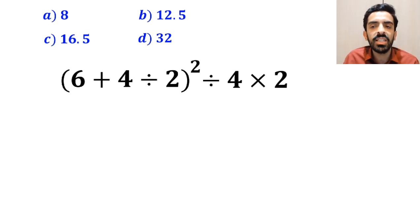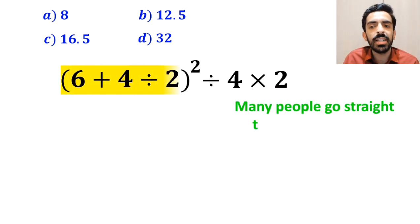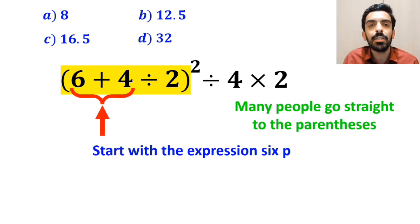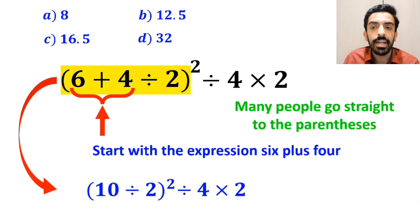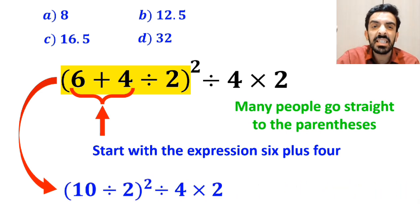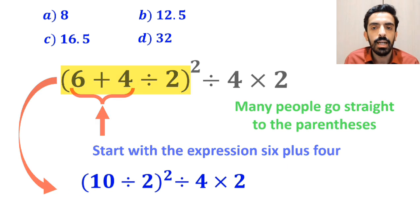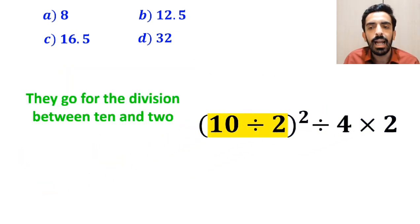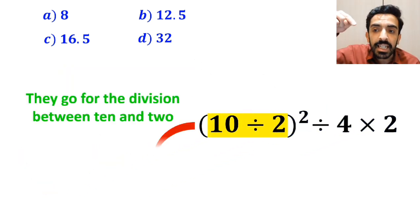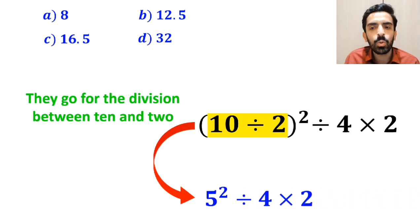In the first step, many people go straight to the parentheses and start with the expression 6 plus 4. So instead of this expression, they write (10 ÷ 2)² ÷ 4 × 2. In the next step, they go for the division between 10 and 2, and instead of this expression, they write 5² ÷ 4 × 2.